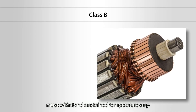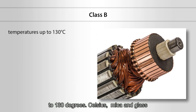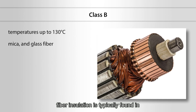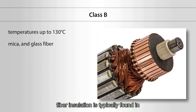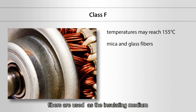Class B insulation must withstand sustained temperatures up to 130 degrees Celsius; mica and glass fiber insulation is typically found in this class. 'Typically' means in most cases — another way to say typically is usually or normally. 'Found in' means if you took the motor apart, this is what you would see. 'Medium' here means material, so the insulating medium is the insulating material.